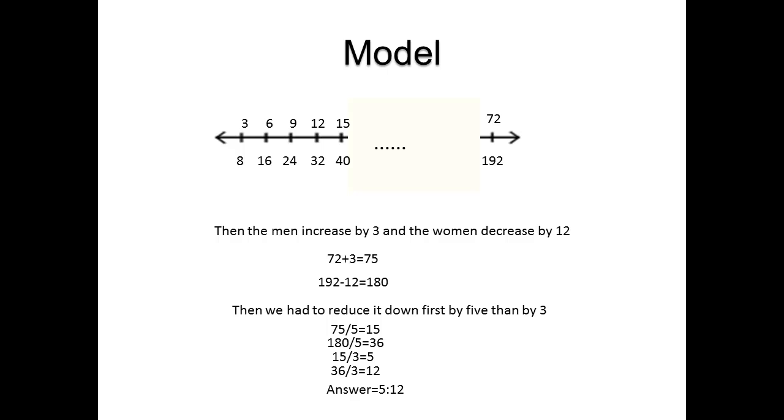For visual learners, we did a simple model that explains the answer. At first, we doubled each of the numbers in the first ratio until the difference between them was 120. The numbers were 72 and 192.